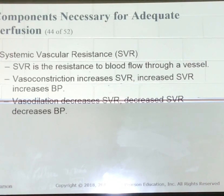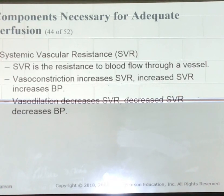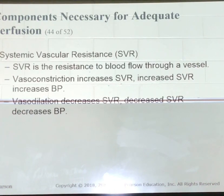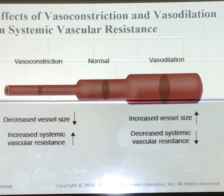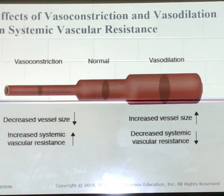Systemic vascular resistance is the resistance that is offered to blood flow through a vessel. As the vessel constricts, resistance inside the vessel increases, which typically increases pressure inside the vessel. Conversely, as the vessel dilates, resistance inside the vessel decreases, which typically decreases pressure inside the vessel. Vasoconstriction is the term for a decrease in vessel diameter, and vasodilation is the term for an increase in vessel diameter. Sympathetic stimulation causes vasoconstriction, which decreases vessel diameter and increases systemic vascular resistance.